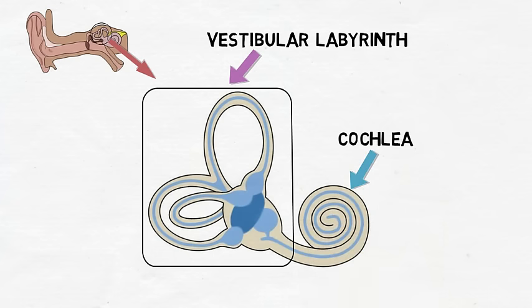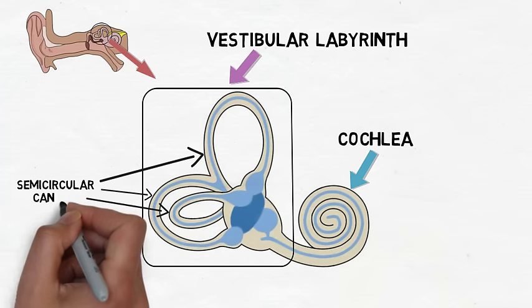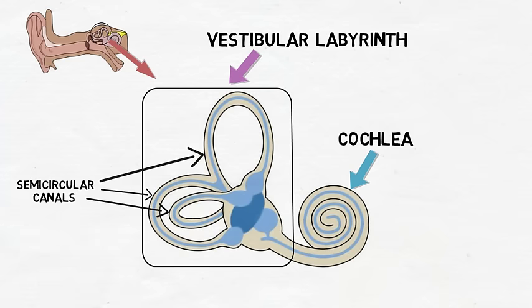The vestibular labyrinth contains the semicircular canals, which are three tubes that are each situated in a plane in which the head can rotate. Each of the canals can detect one of the following head movements: nodding up and down, shaking side to side, or tilting left and right.